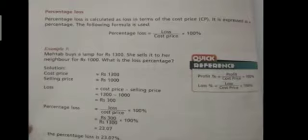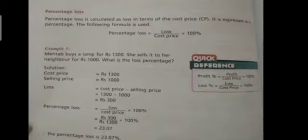Now we have percentage loss. Percentage loss is also calculated in terms of cost price. The formula is: percentage loss equals loss divided by cost price, multiplied by 100. First, we calculate loss as cost price minus selling price. That gives us the loss amount, and then we calculate the percentage from cost price.